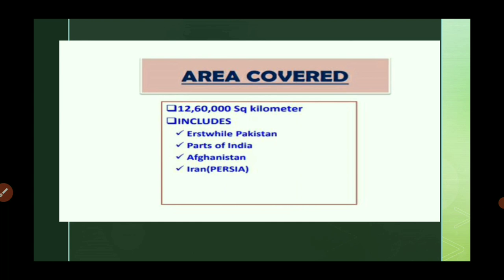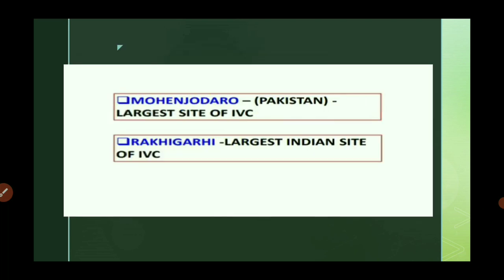The area covered by the Indus Valley Civilization is 1,260,000 square kilometers, including eastern Pakistan, parts of India, Afghanistan, Iran, and Persia. Mohenjo-daro, located in Pakistan, is the largest site of the Indus Valley Civilization overall.